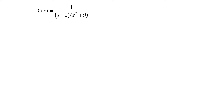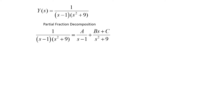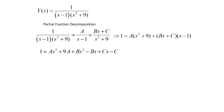To take the inverse Laplace transform, we need to break this up using partial fractions. So 1 over (s minus 1)(s squared plus 9) decomposes as A over s minus 1 plus Bs plus C over s squared plus 9. We multiply by the common denominator, giving us 1 equals A(s squared plus 9) plus (Bs plus C)(s minus 1). Expanding: 1 equals As squared plus 9A plus Bs squared minus Bs plus Cs minus C. We equate coefficients: for s squared, 0 equals A plus B; for s, 0 equals negative B plus C; for constants, 1 equals 9A minus C.